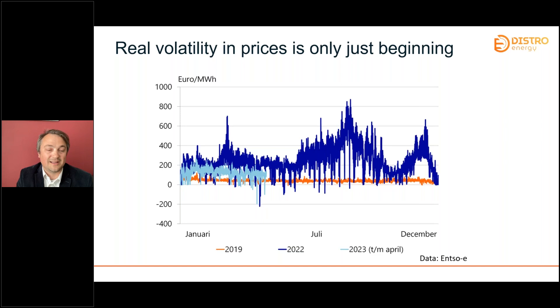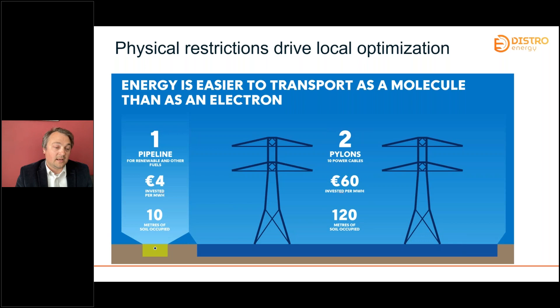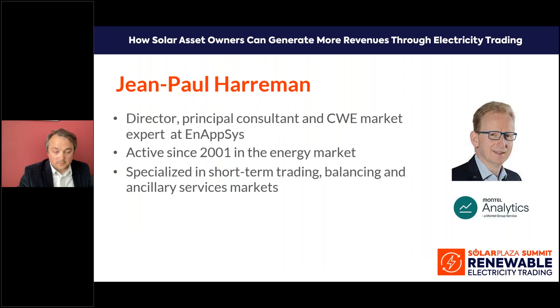A lot of the limitations are also on the physical restrictions. Most energy currently comes in through oil via pipelines and is transported to the hinterland. If it starts coming through electrons, you need a lot more land — a pipeline takes roughly 10 meters of soil, whereas electricity transport requires roughly 120 meters. The cost is also quite a bit higher.